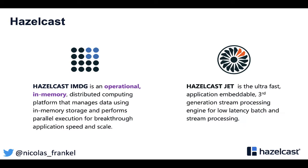I work for a company called Hazelcast, which has two products. The main one is an in-memory data grid — you can think about it as distributed data structures. You can store and replicate your data over different nodes over the network. The second one is Hazelcast Jet, an in-memory stream processing engine. Today I won't talk about Hazelcast — I will just use it, and I'll talk about how we can containerize our Java app.